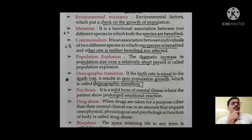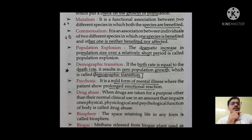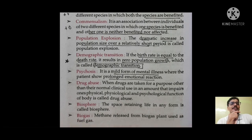Mutualism, commensalism, and parasitism: in mutualism, both species benefit — it is a functional association between two species where both benefit. In commensalism, one species benefits and the other remains neutral — neither affected nor benefited. In parasitism, one benefits and one is harmed — covered in environment lectures. Population explosion is a dramatic increase in population size over a relatively short period. Demographic transition: if birth rate equals death rate, it results in zero population growth.